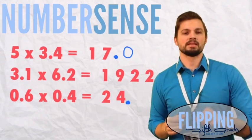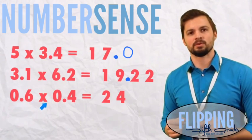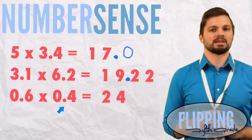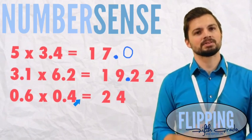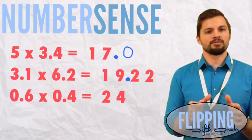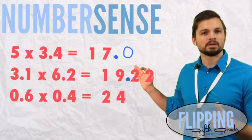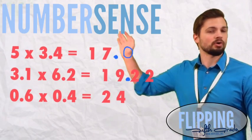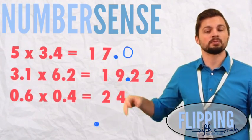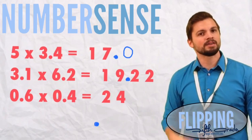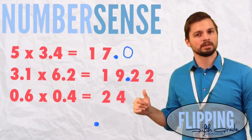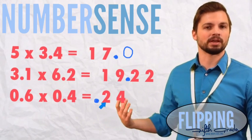And finally, 6 tenths times 4 tenths equals 24. That doesn't make sense because both are less than 1, so my answer has to be less than 1. Therefore, my decimal has to go before the 2 in 24 because the answer has to be less than 1. If I put it between them, my answer is going to be greater than 1.